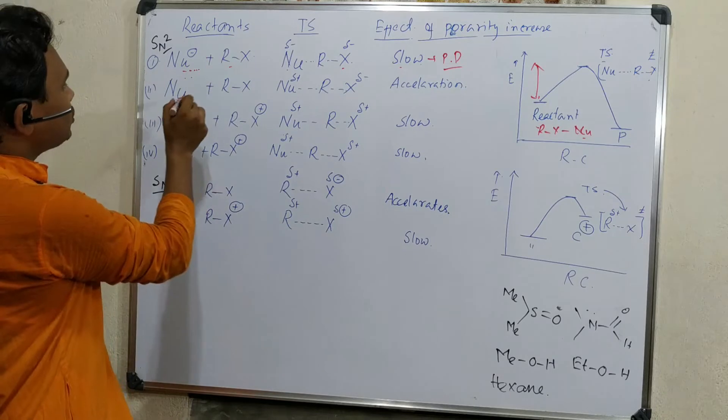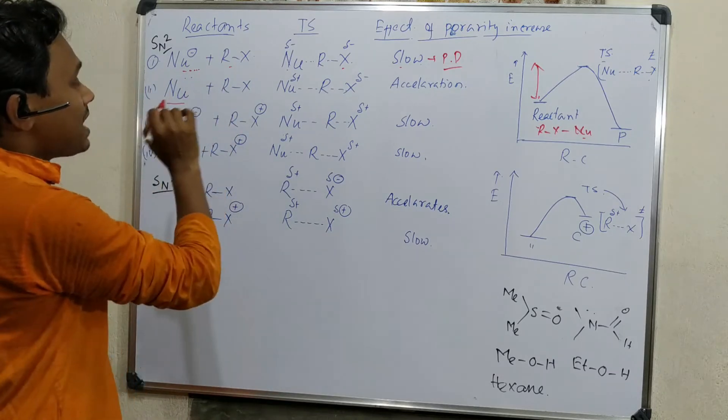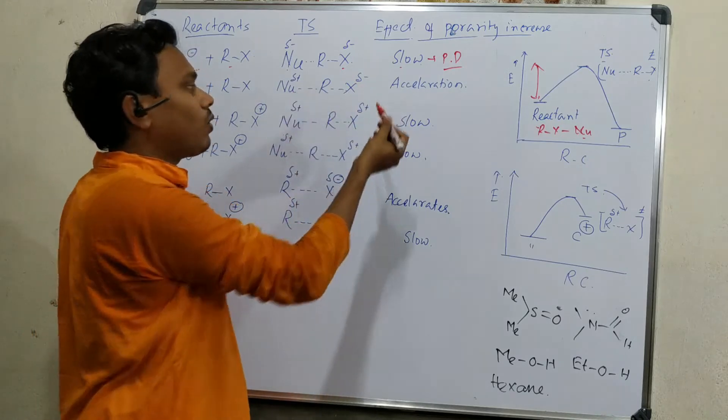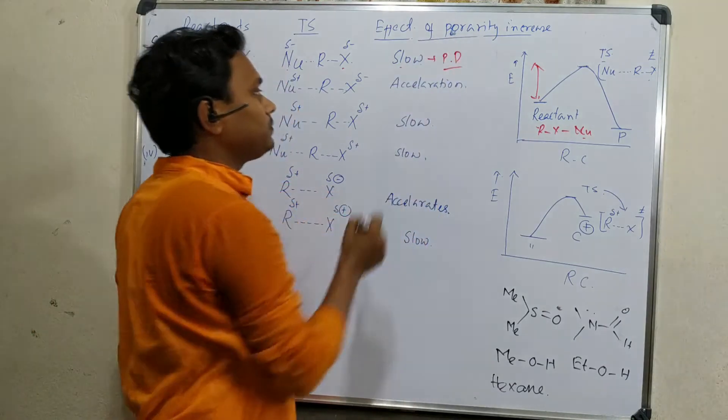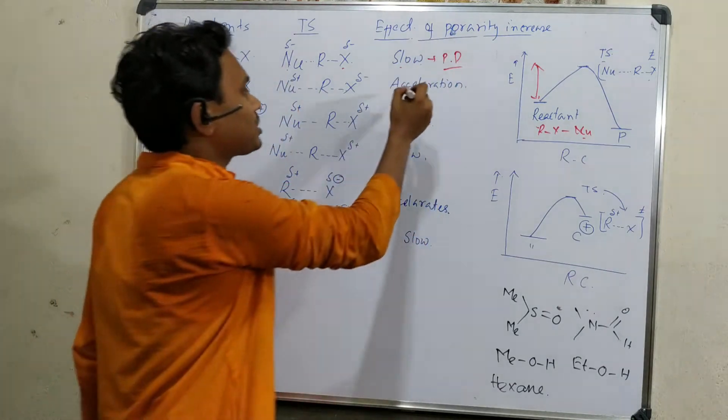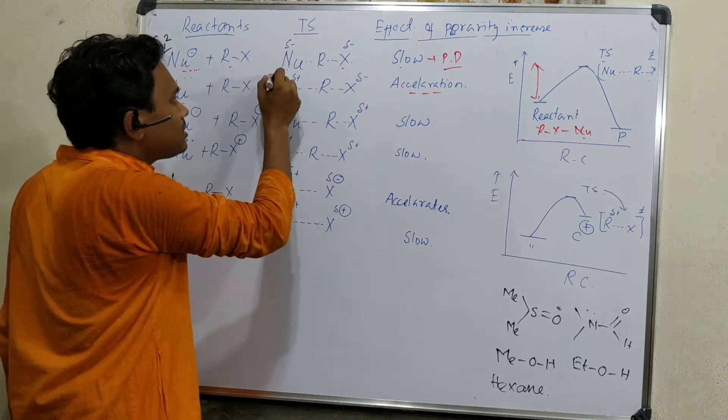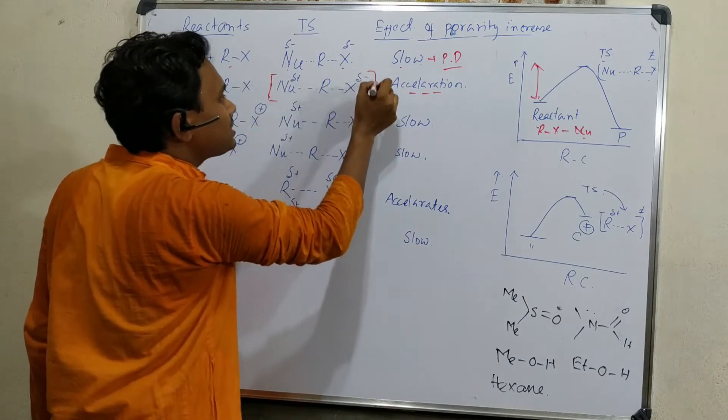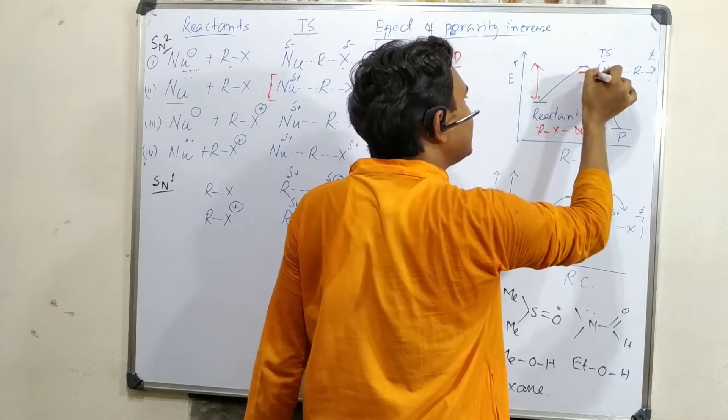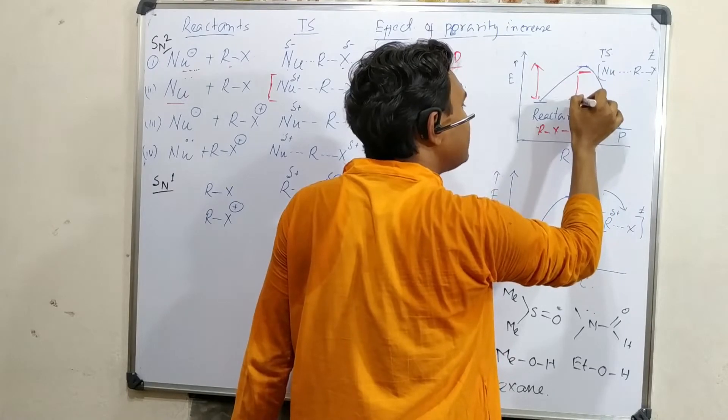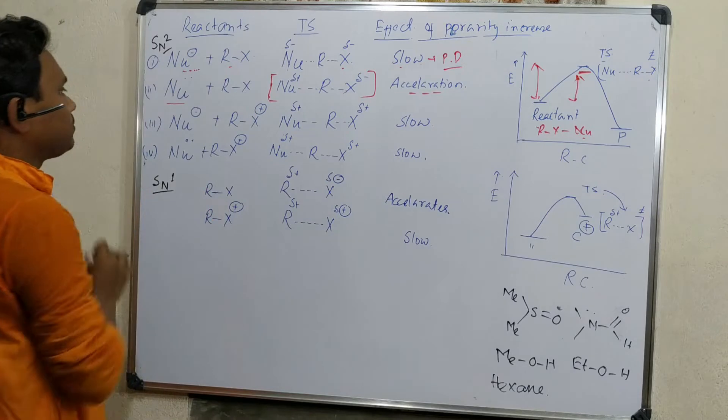Secondly, when the nucleophile is neutral, what happens here, no charge factor. And in transition state this charge is also again delocalized. So effect of polarity, if we increase, this reaction rate increases. Why? Because this part here charge is delocalized, it is very small amount but little bit decreases. Overall enthalpy of activation decreases. Consequently this rate is accelerated.